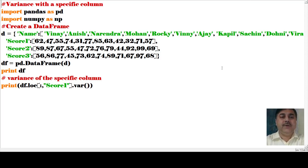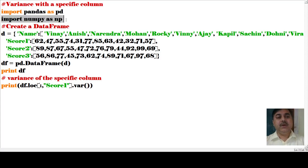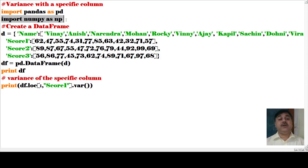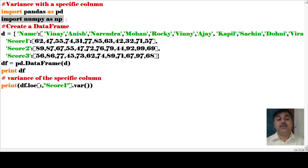In this first program we are calculating data variance. First, pandas has been imported as PD, and numpy has been imported as NP. After importing these two libraries, we are creating a dictionary or data frame.